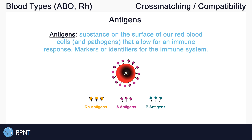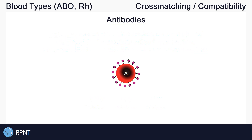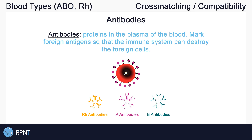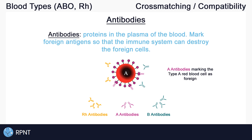The letter A tells us that A antigens are present on my red blood cells. Now let's talk about antibodies. Antibodies are proteins in the plasma of the blood. They are part of the immune system which help in finding and marking foreign substances that enter the body. Whenever an antibody meets the same type of antigen, the antibody marks it as foreign so that the immune system can destroy it. For example, an A antibody can only bind to an A antigen. The Rh and B antibodies floating around in the plasma cannot bind to the A antigens.